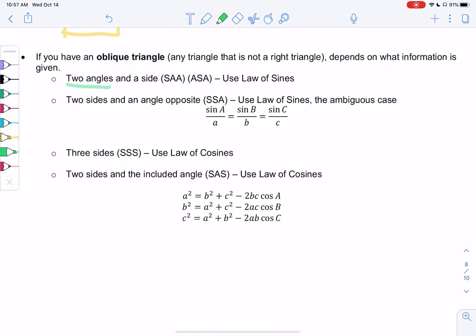So anytime we have two angles and a side, but really having two angles is really what helps us, but you do need the side as well, we can use the law of sines. So that can be side angle angle (SAA) or angle side angle (ASA). But either way, the law of sines will solve this.